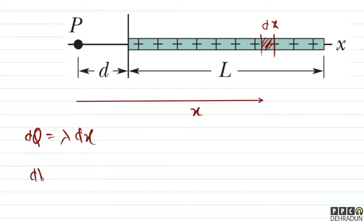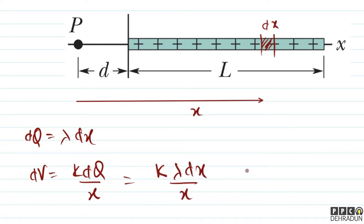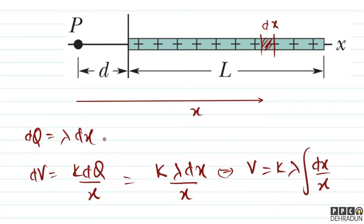The potential created at point P due to charge DQ is dV = k·DQ/X. Substituting DQ = lambda·DX, we need to integrate. So V = k·lambda × ∫(DX/X). X varies from D (the nearest element) to D+L (the farthest element), so the limits are D to D+L.